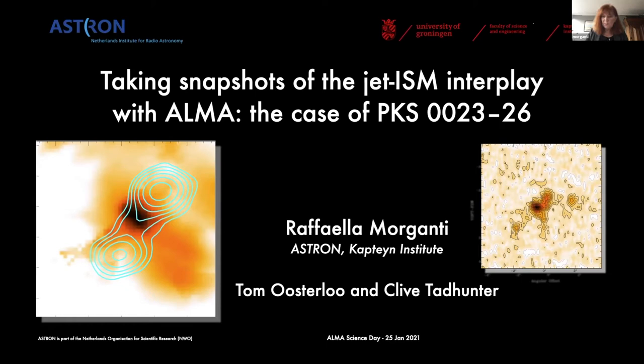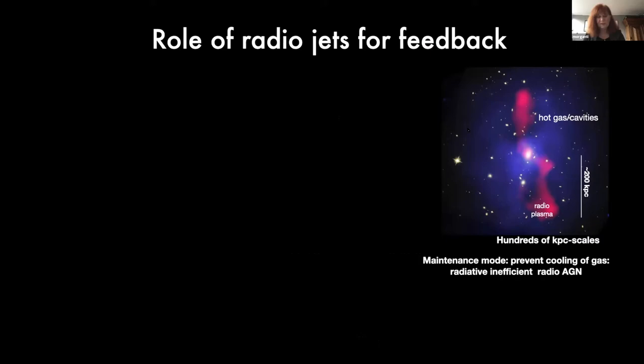Radio jets are one manifestation of nuclear activity of active black holes. They can be quite an impressive manifestation because they play a role in shaping the host galaxy where they are sitting in. One of the main and nicer evidence for AGN feedback is in the cavities that radio jets can form in the hot medium by their impact as they grow into this medium.